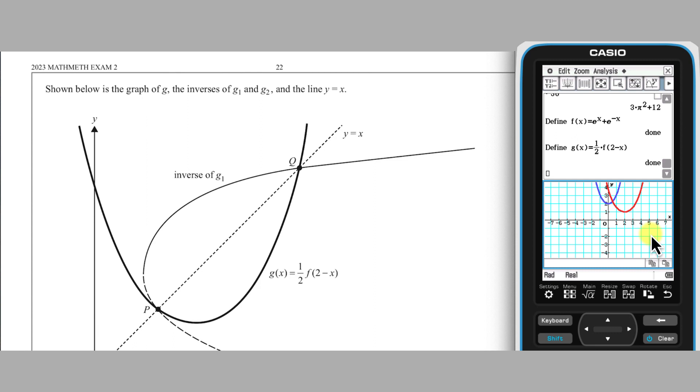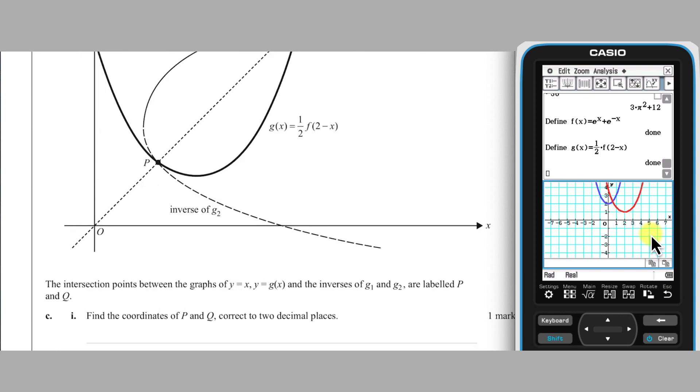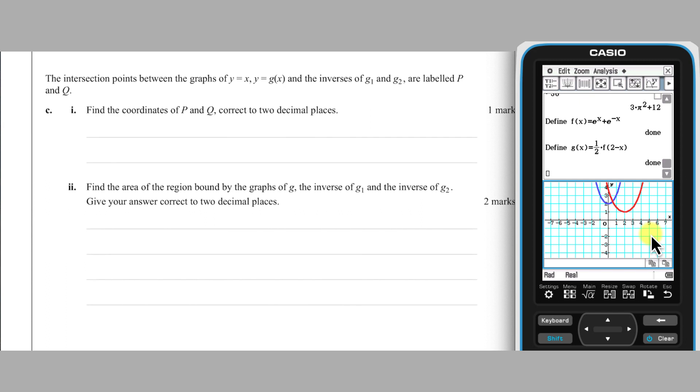In part C, we are provided with a graph of G as well as the inverses of G1 and G2 and the line Y equals X. The intersection point of these graphs, P and Q, can be found by solving G of X equals X using ClassPad.